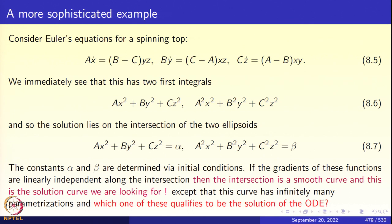We know that given initial conditions x(0), y(0), z(0), the solution to 8.5 is a certain curve in R³ — but which curve? The trajectory must lie on both these ellipsoids, so it lies on their intersection, which is a curve. The gradients of ax² + by² + cz² and a²x² + b²y² + c²z² are linearly independent, so these two ellipsoids cut along a curve. That curve is the solution curve, but not the actual parameterization — the intersection admits infinitely many parameterizations.